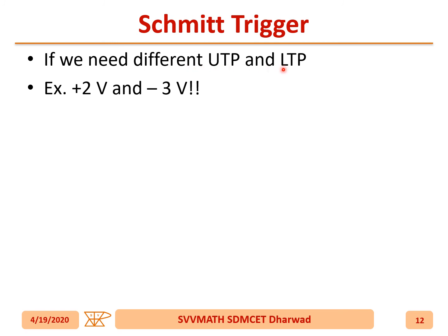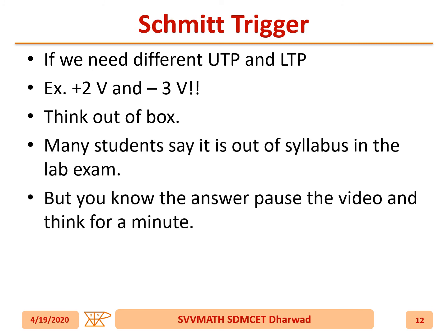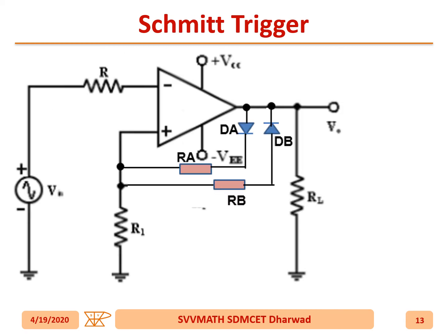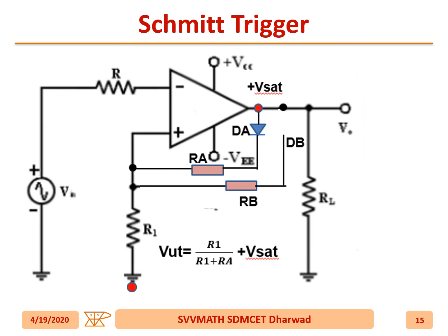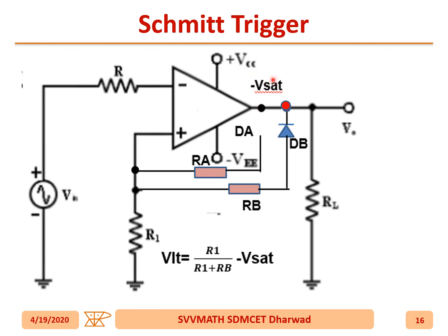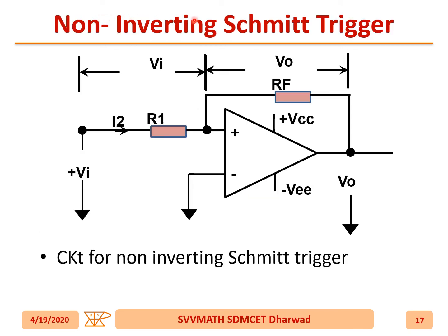If we need a different UTP and LTP — say UTP = 2 V and LTP = −3 V — how do you design the circuit? Think about what changes to make. This circuit uses two diodes Da and Db in the feedback path. Whenever the op-amp output is plus V_sat, Da conducts and current flows through Ra. When the output is minus V_sat, current flows through Db and Rb through R1.